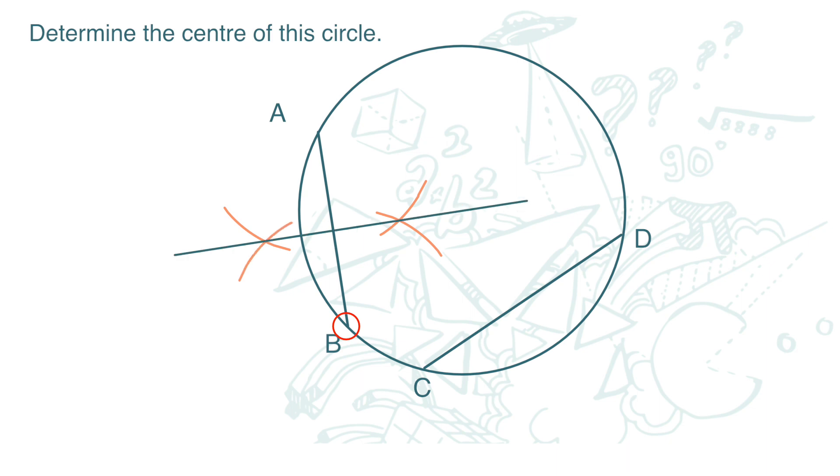Joining up the two intersections, we get the perpendicular bisector.